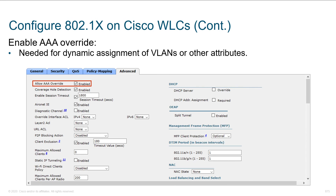Under the advanced tab you'll find the ability to perform what's called AAA override. If we want to change things that are already existing on the device, that's what we call override. Remember the second A in AAA is authorization. When authorization parameters are returned to the authenticator in the format of RADIUS AV pairs, what do we do when there's existing information hard-coded on the device and new dynamic information just showed up? If AAA override is enabled, we believe the dynamic information.